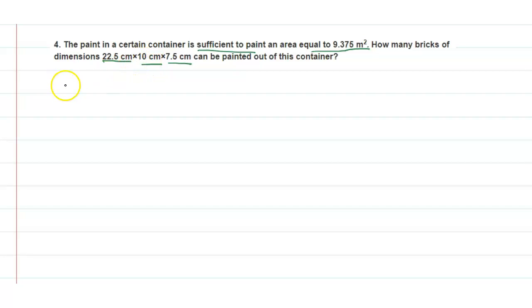Here given is length equals to 22.5 centimeter, breadth equals to 10 centimeter, and the height equals to 7.5 centimeter. The total surface area of cuboid is equals to 2 multiplied with lb plus bh plus hl.